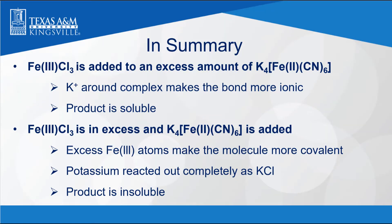In summary, the first reaction you saw was when ferric chloride was added to an excess amount of potassium ferrocyanide. It's the potassium ions around the complex that makes the bond more ionic and the product soluble. When ferric chloride is in excess and potassium ferrocyanide is added to it, the excess iron 3 atoms make the molecule more covalent. The potassium is reacted out completely as potassium chloride, and thus the product is insoluble.